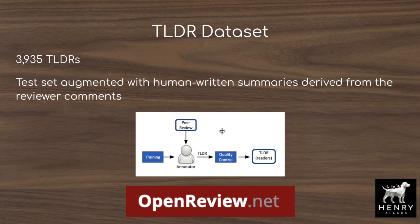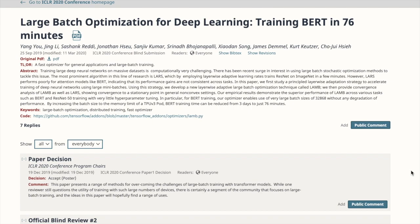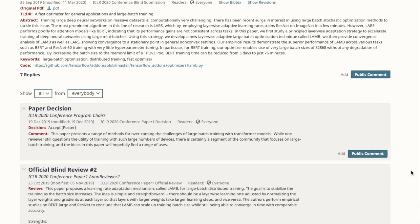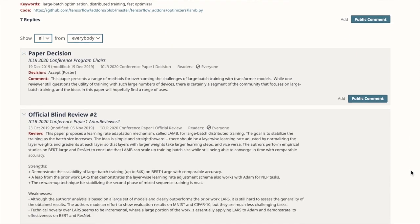The TLDR dataset contains 3,935 of these one-sentence summaries corresponding with research papers. They also use an interesting technique with the OpenReview.net platform to use the peer review comments to get additional TLDR summaries for the test set. The authors turn to peer review comments to get more TLDR summaries for a given paper because it's easier than having an author write many different variations of the same paper, and it's an easier way to get more data for evaluating these models.